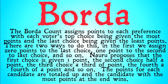The Borda Count assigns points to each preference, with each voter's top choice being given the most points and the last choice being given the least points. There are two ways to do this. The first assigns zero points to the last choice, one point to the second-to-last choice, and so on up to the first-place choice. Another way assigns one point to the last choice and continues upward, but both systems will provide you with the same winners and the same social choices.